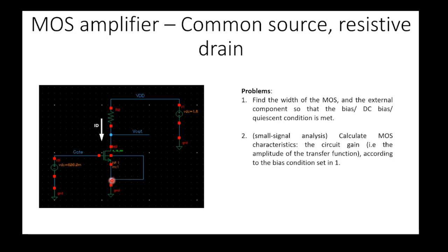In the common source configuration we usually have the input at the gate and the output at the drain. So the output is at the drain of the NMOS and the input is at the gate of the NMOS. In this series we'll get the idea of what does it mean common source, what does it mean resistive drain, and we will start to solve a very simple problem related to this configuration of the MOS used as an amplifier.